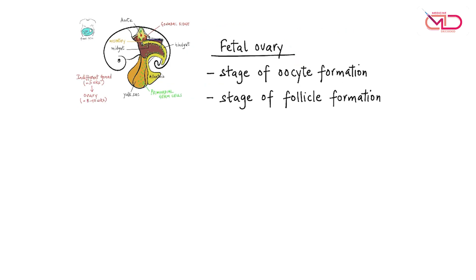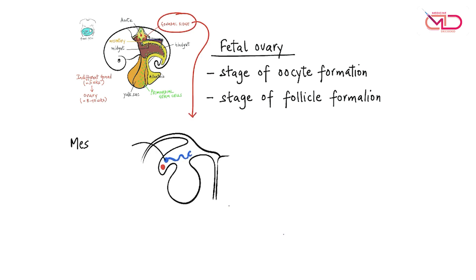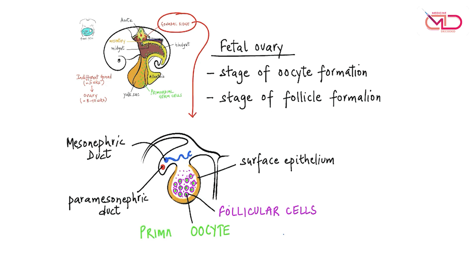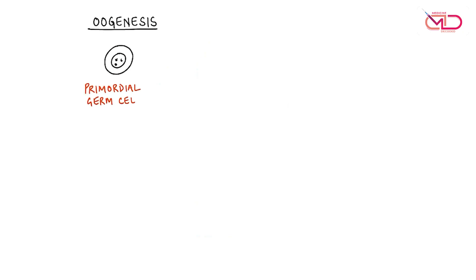Thereafter, the indifferent gonad forms the ovaries at around eight to ten weeks of gestation. In the fetal ovaries, oocytes and follicles are developing simultaneously. The surface epithelium of the ovaries develops from the coelomic epithelium of the gonadal ridge. There are primordial germ cells, and mesenchymal cells surround the oocytes to form the follicular cells, giving rise to the primary oocyte.